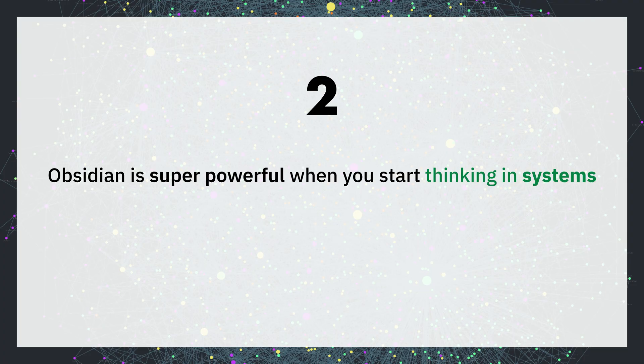Obsidian is super powerful when you start thinking in systems. For me, an Obsidian system contains three things: first, an MOC or map of content page, which is an index of everything related to that system area; then a template file, so it's easy to create new notes of a certain type; and on your MOC, a Dataview table to link all those pages together. Once you start thinking in systems, you'll have a daily note system, a meeting note system, a people note system — all enclosed systems inside your larger Obsidian life.